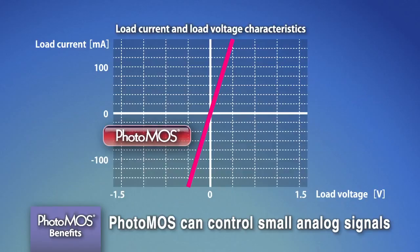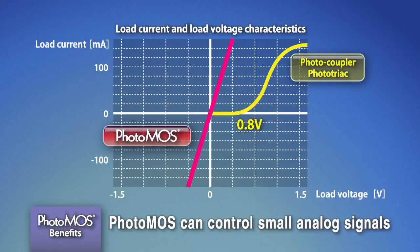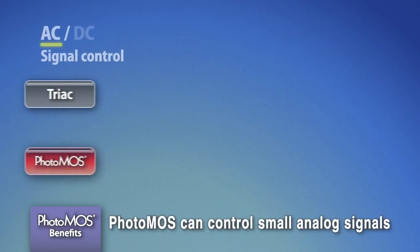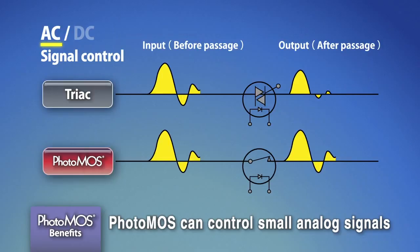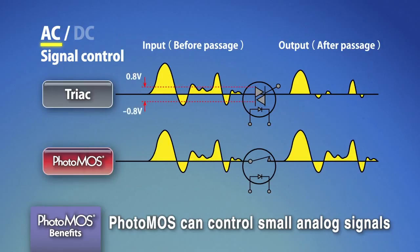A PhotoMOS can control a small analog signal. Triac-type photocouplers or solid-state relays cannot control signals of less than a few hundred millivolts. For example, when a triac controls an AC signal, signals with on voltage less than 0.8 volts get buried.